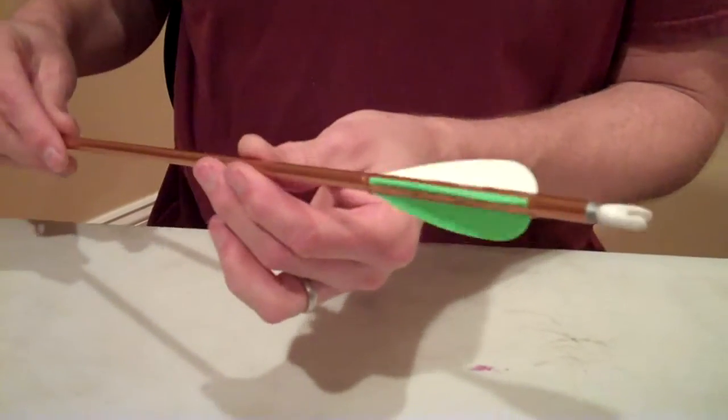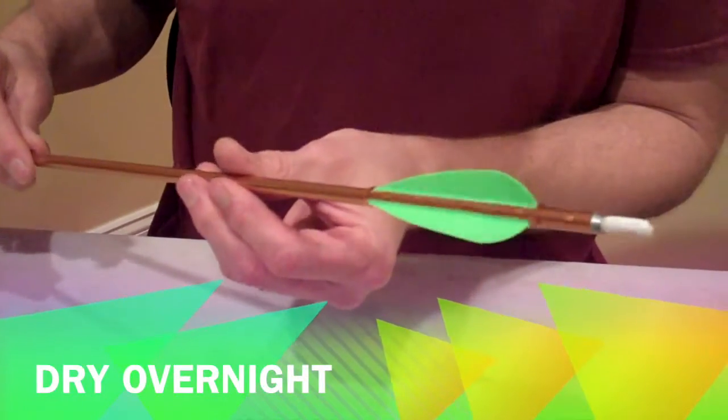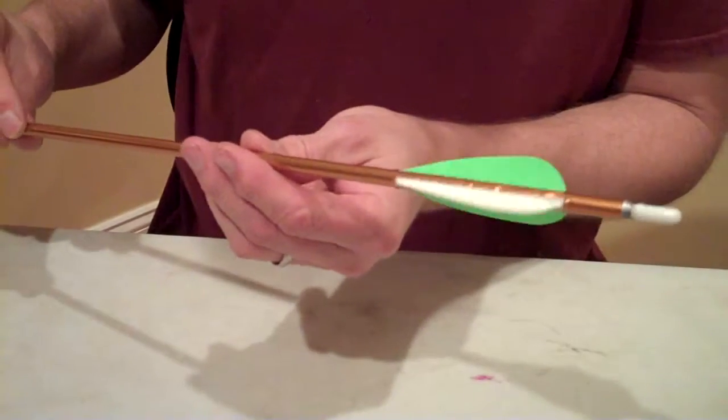With that, your arrow is ready to go. Now, you just set this aside and let it dry. I usually let mine dry for overnight to make sure the glue is all good and dry and you're ready to shoot.